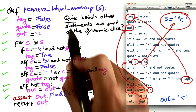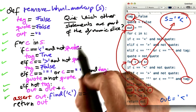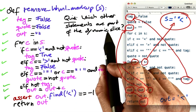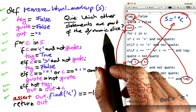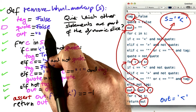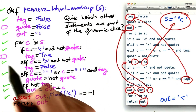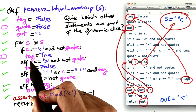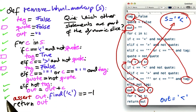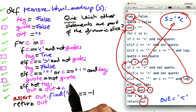So here's a quiz. Which other statements in the program are also part of the dynamic slice? Is it quote equals false? Is it tag is set to true? Is it tag is set to false? Or is it quote is set to not quote?